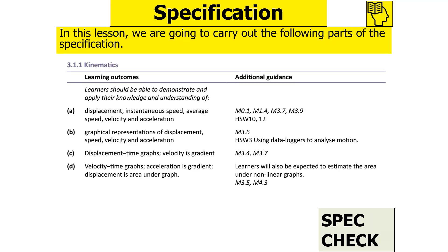This looks at the following part of the OCR A-level physics specification: 3.1.1 kinematics. We're going to look at the graphical representations of displacement, speed, velocity and acceleration — the idea of displacement time graphs where the velocity is the gradient, and velocity time graphs where the acceleration is the gradient and the displacement is the area under the graph.